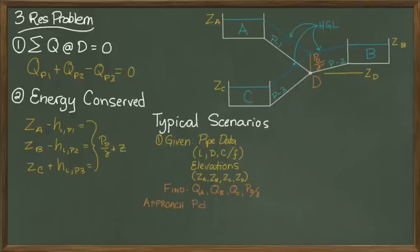The approach to this particular problem is to pick a value for the pressure head at point D such that the summation of the flow into or out of point D is zero. In other words, once you have a guess for the pressure at D, then you can solve for the head losses getting to or from D for each of the water sources.